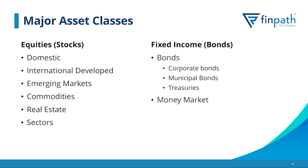Next we have commodities, which falls under the area of precious metals — whether silver or gold — or agricultural goods such as wheat, cattle, and so forth. Commodities tend to be bundled together in a group retirement plan; there's not many times you find them isolated as individual sections. Real estate and sectors are other areas we might find within a group retirement plan.